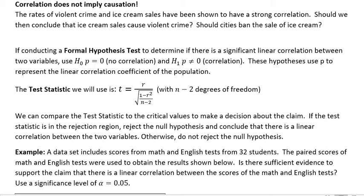If conducting a formal hypothesis test to determine if there is a significant linear correlation between two variables, use ρ = 0 for your null hypothesis. ρ = 0 suggests there's no correlation. And H₁, your alternative hypothesis, should be ρ ≠ 0. That would imply that there is correlation. These hypotheses use ρ to represent the linear correlation coefficient of the population.